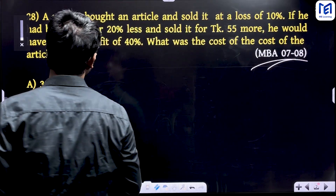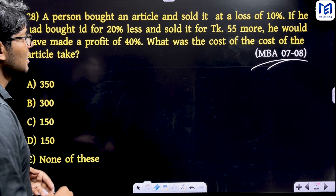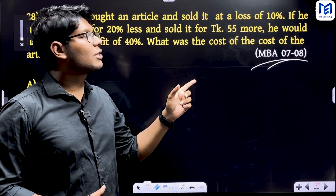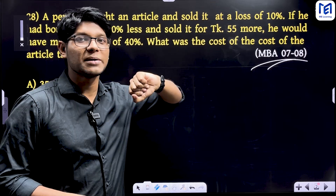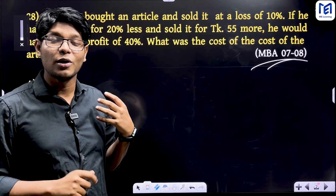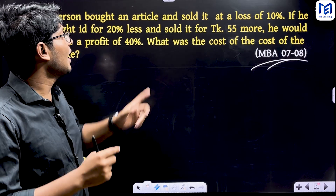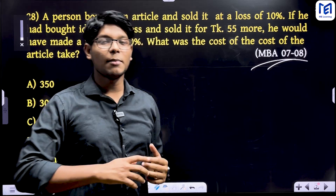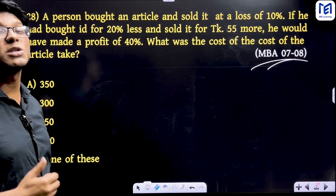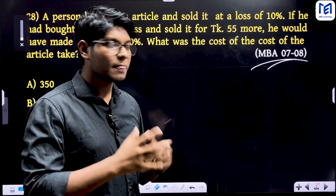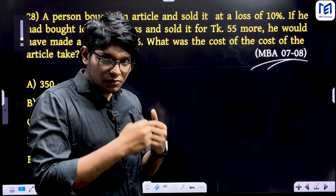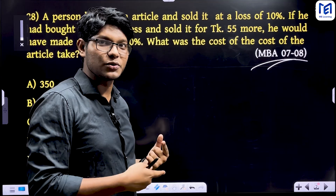In the next step: a person bought an article. When he sold it, he sold it at a loss of 10%. If he had bought it for 20% less, he would have made a profit of 40%. And if he had bought 14.5% less, the same amount of money would give the same result.